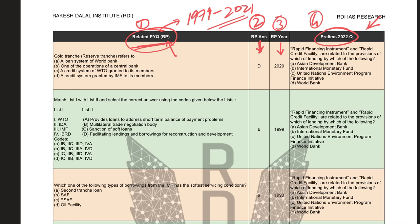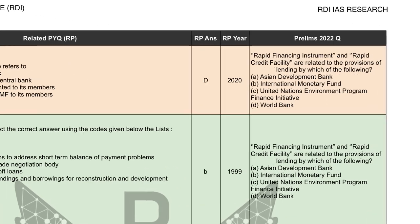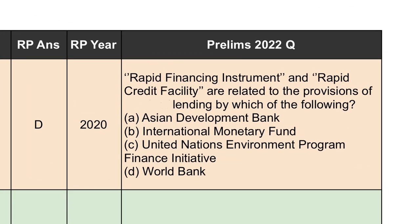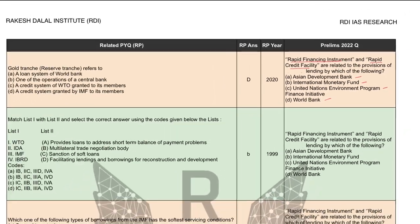Let us now begin the analysis. The first question from Prelims 2022 reads: 'Rapid Financing Instrument and Rapid Credit Facility are related to the provisions of lending by which of the following?' The options are ADB, IMF, United Nations Environment Program Finance Initiative, and World Bank.